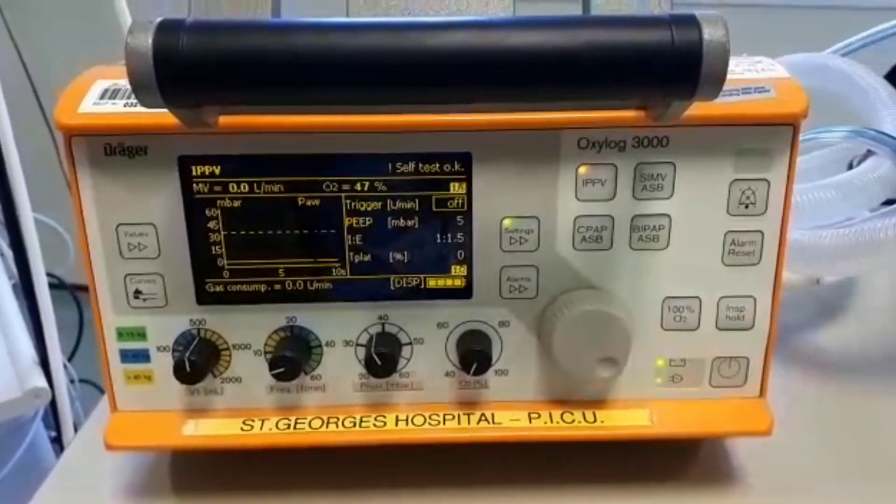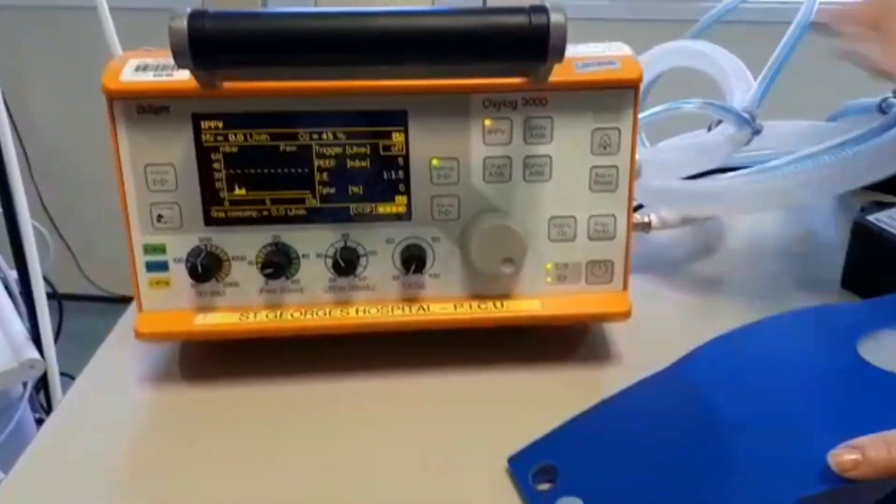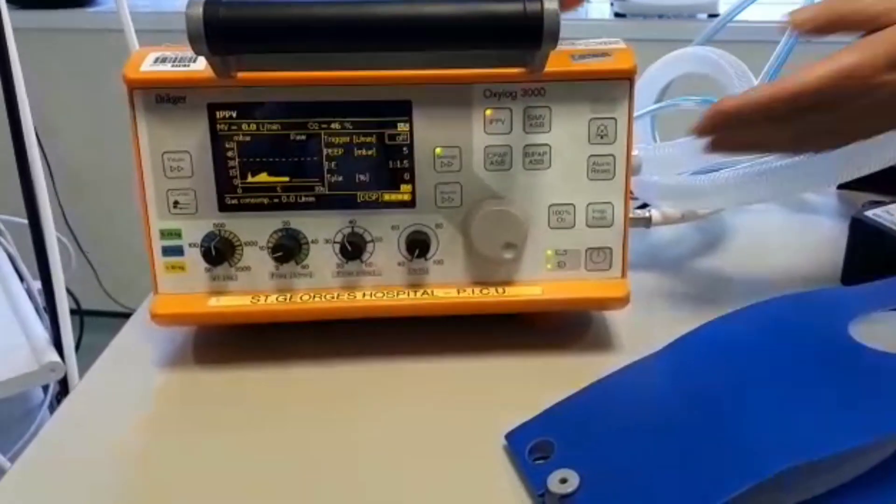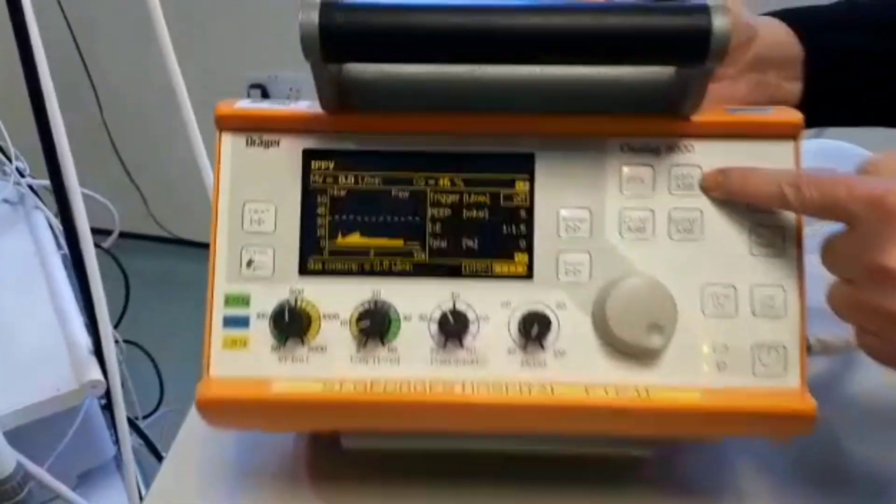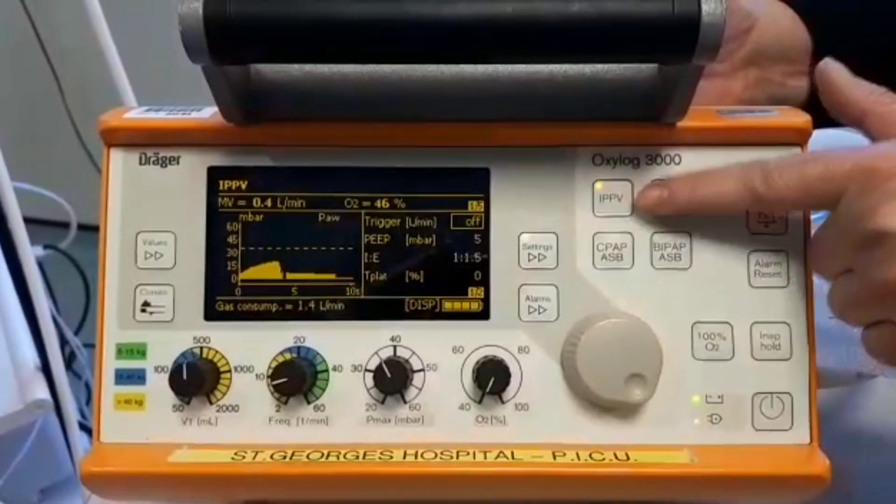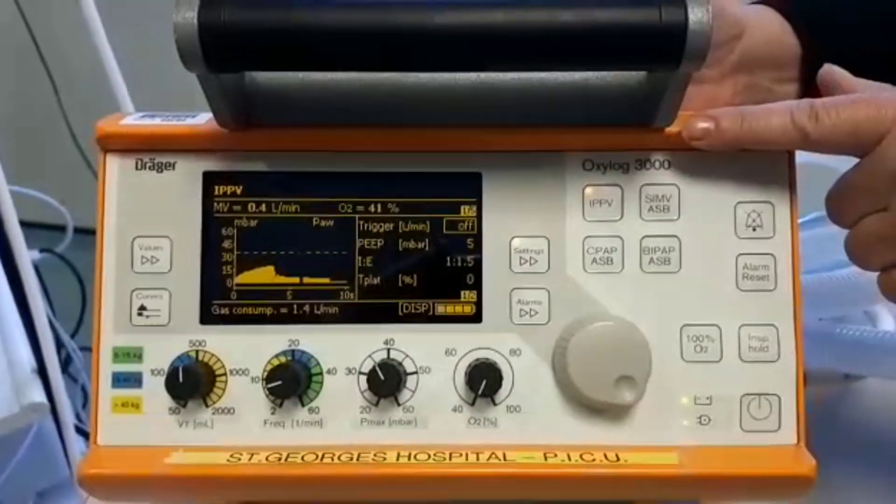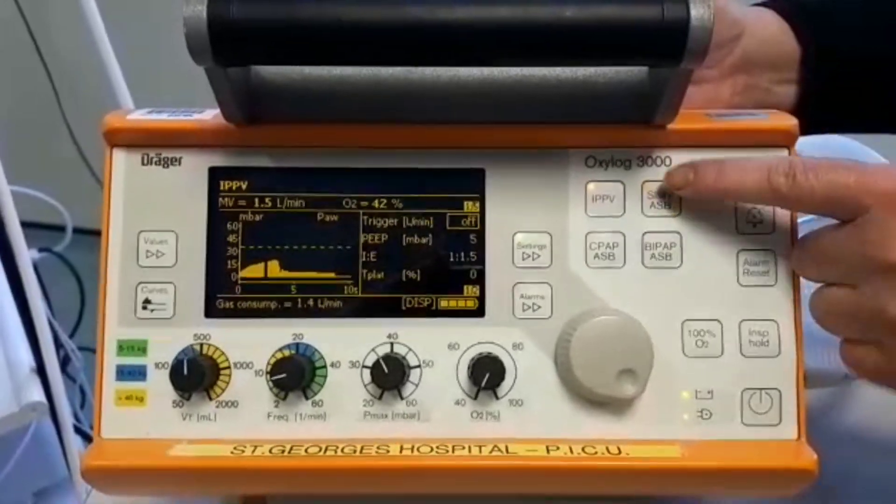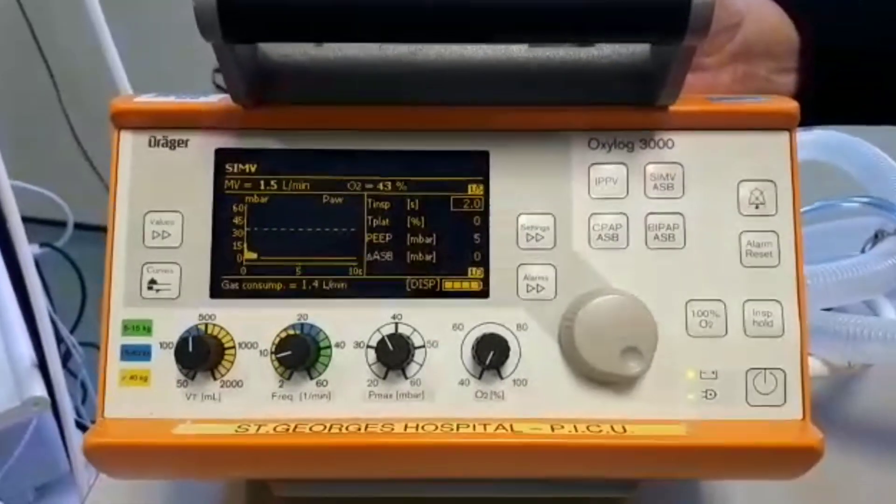I'm just going to connect to a test lung. This ventilator does not go into standby, immediately goes into ventilation. We have the choice of four modes here. And as I said, this is IPPV on this one, but on the 3000 Plus it's CMV. To change mode, you press until the amber light is flashing and press the control knob to confirm.